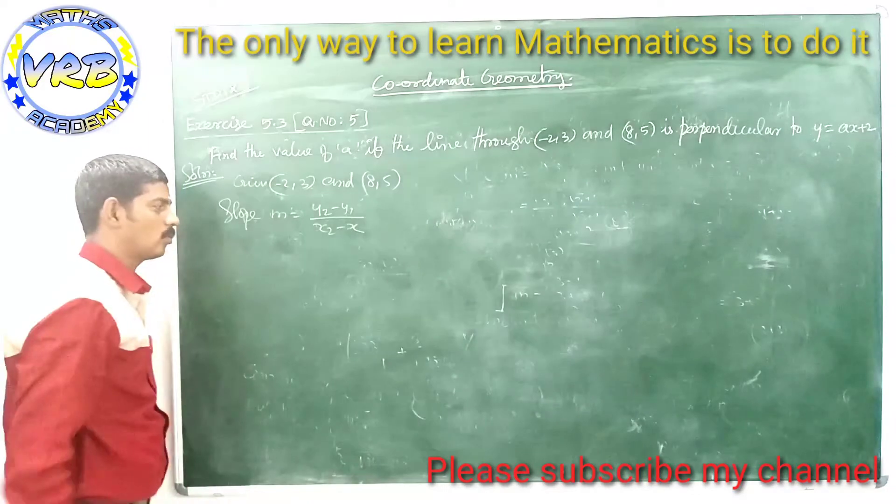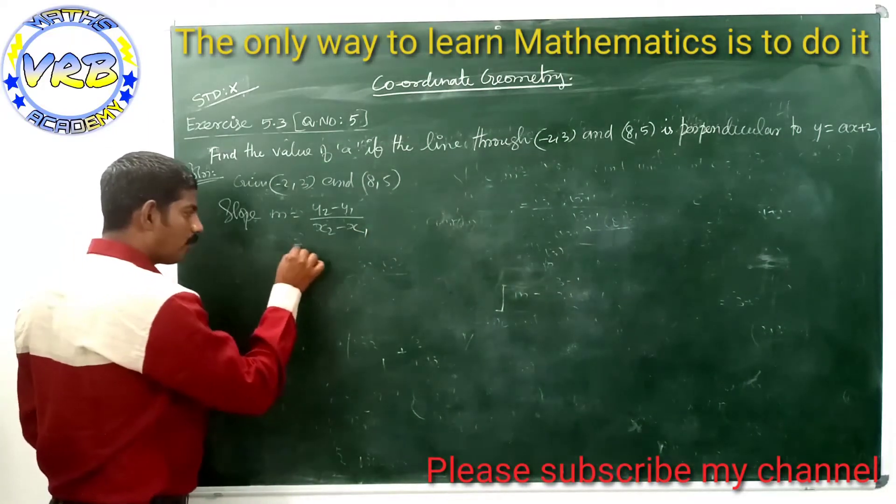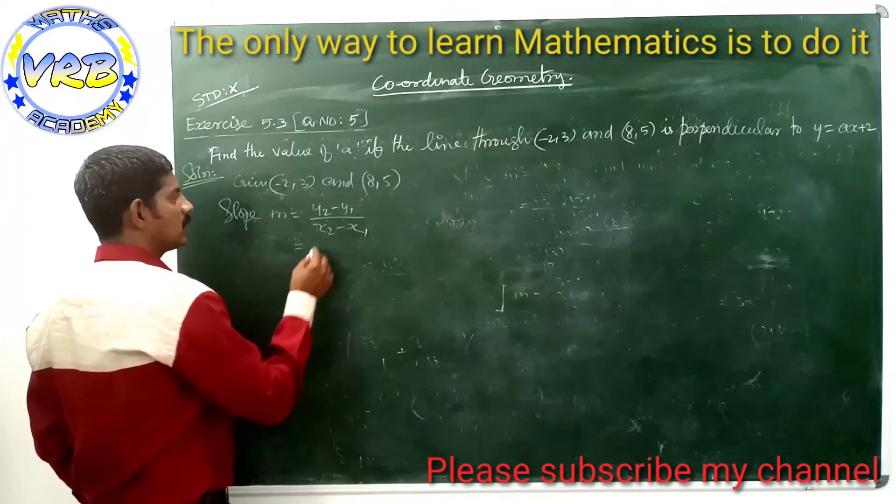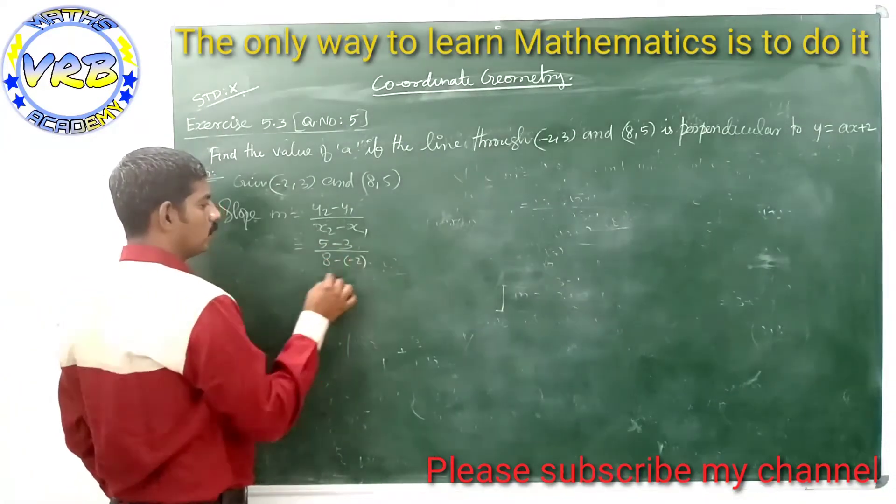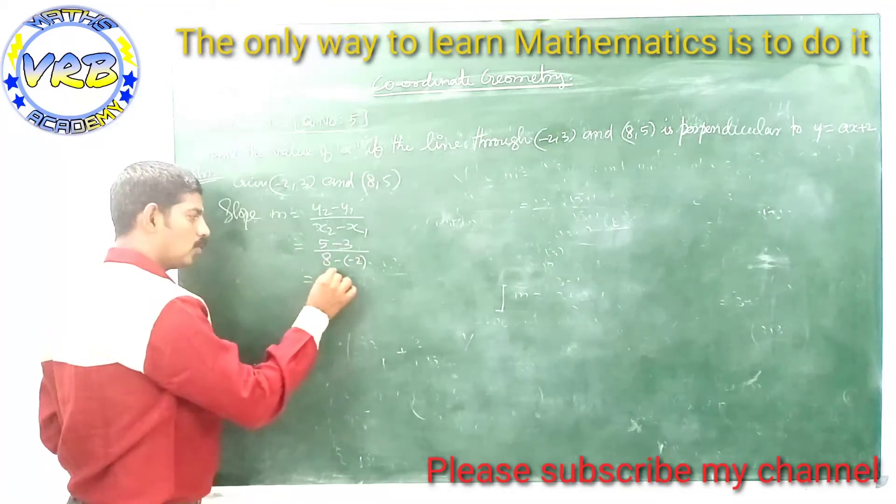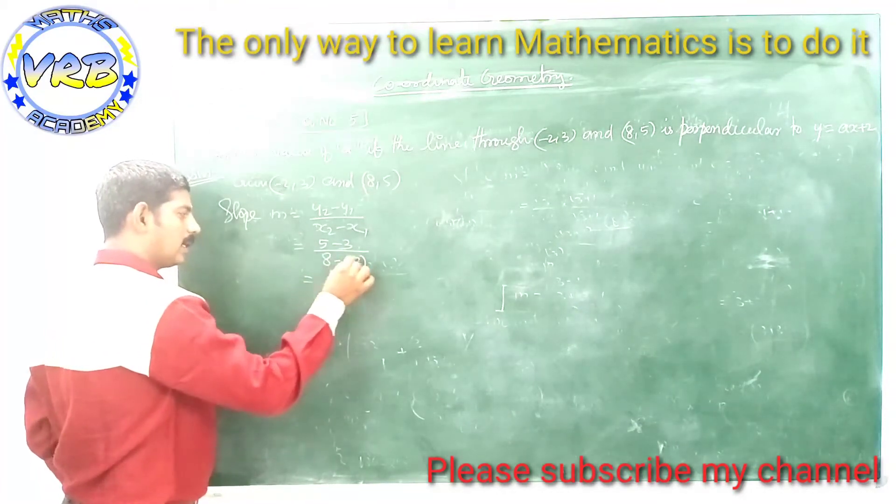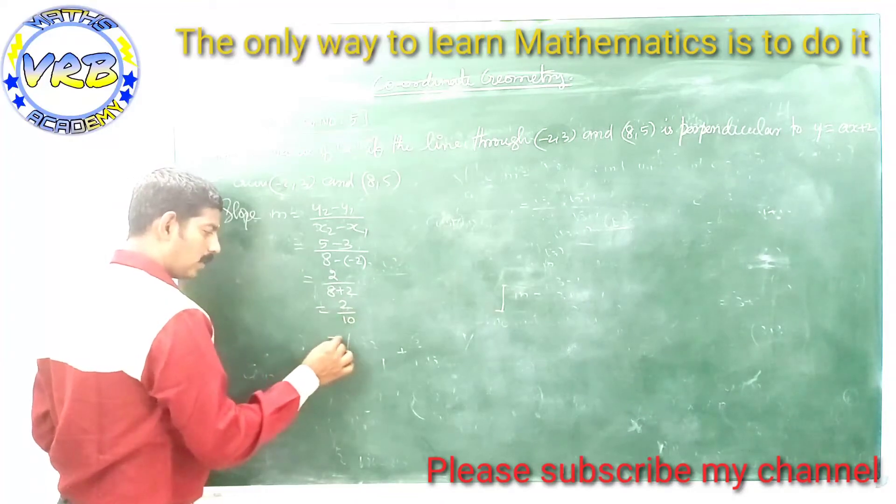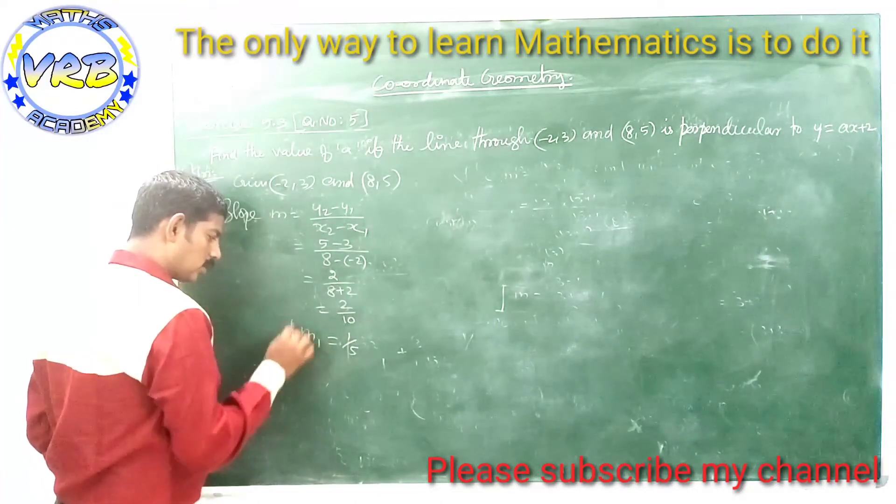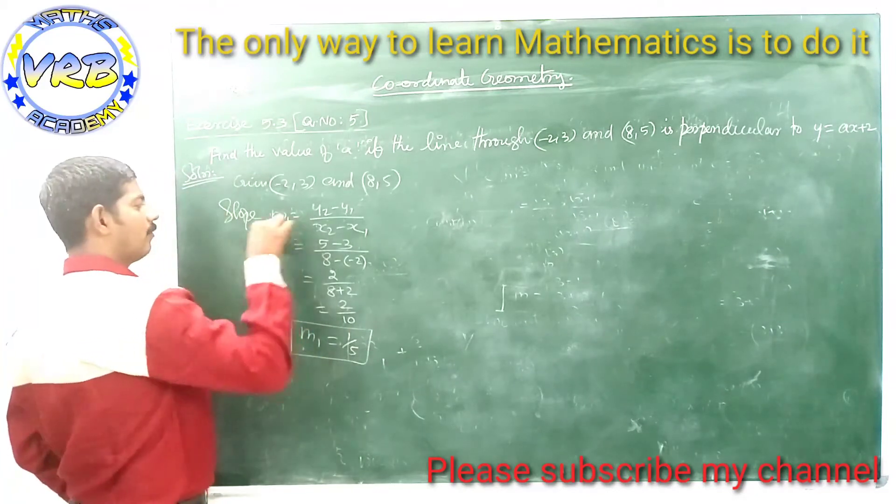Substituting the values: (5 - 3)/(a - (-2)) = (5 - 3)/(a + 2) = 2/(a + 2). This simplifies to 2/10 = 1/5. So m1 = 1/5, that is the slope of the first line.